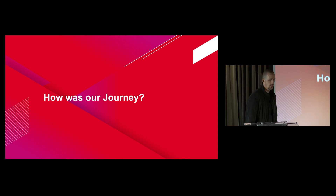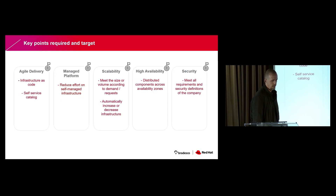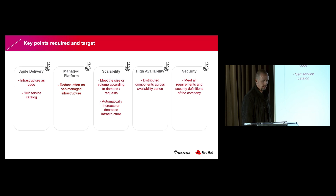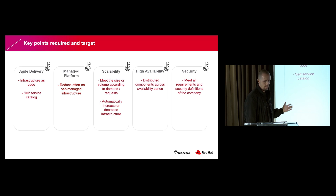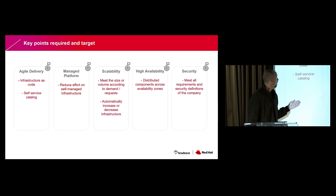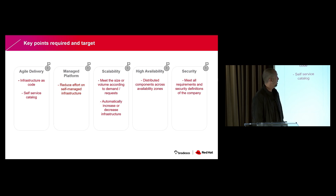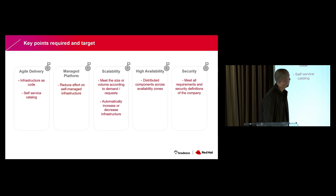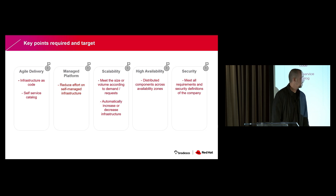How was our journey to implementing all this infrastructure? Here we have the pillars of our key points required. For each key point, we mapped what we would need to follow as a guide. For example, the first one was agile delivery — we mapped infrastructure as code and self-service catalog as our guide. The next one, managed platform — our guide was reduced effort on self-managed infrastructure. For scalability, our guide was to meet the size or volume according to demand and automatically increase or decrease infrastructure. For high availability, distributed components across availability zones. And for security, meet all requirements and security definitions of the company.